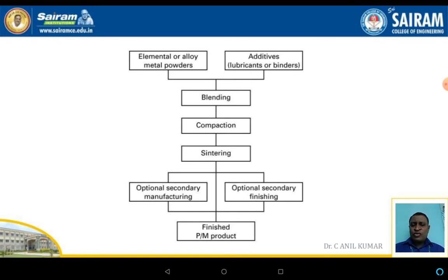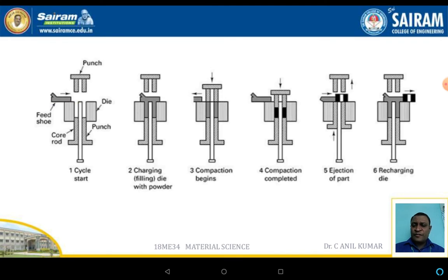This is the flow process of the powder metallurgy technique. The powder material is blended, compacted, and sintered. After sintering, secondary operations depend on the type of material — either they are required or not. Finally, the finished component is obtained. The schematic diagram shows how the powder metallurgical part is obtained in the process.